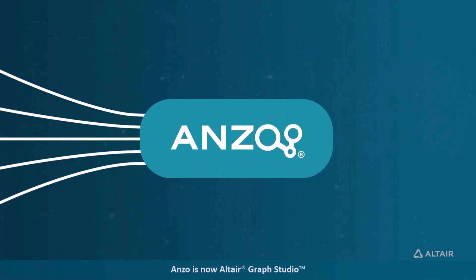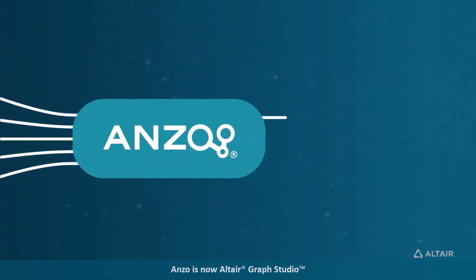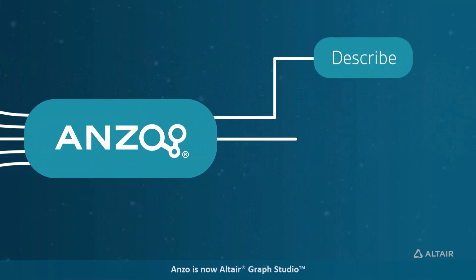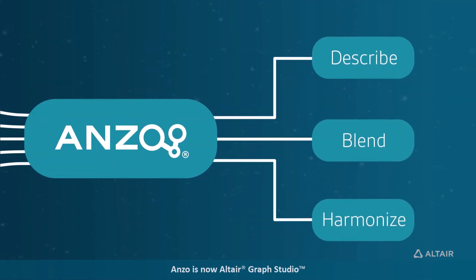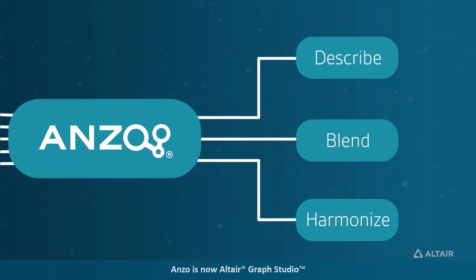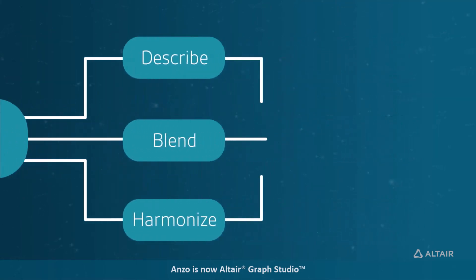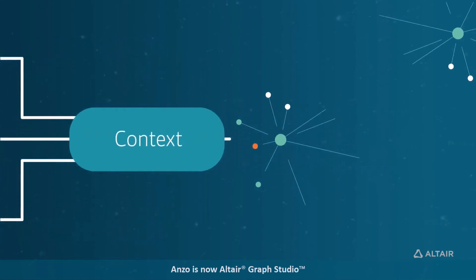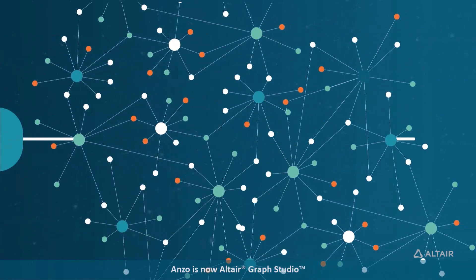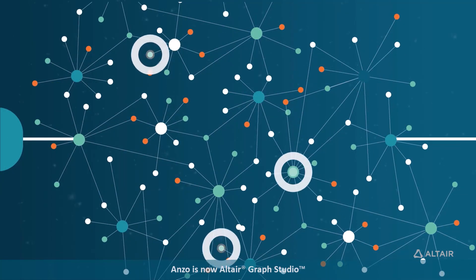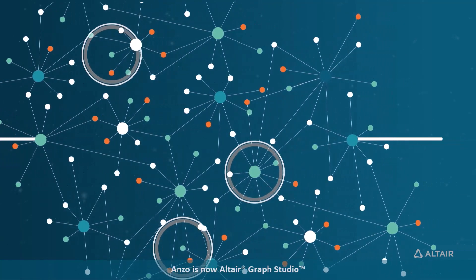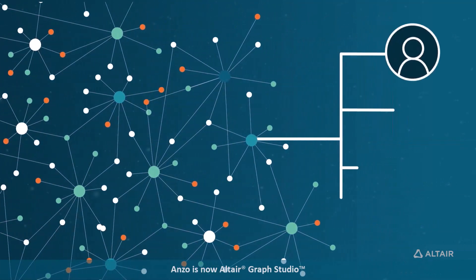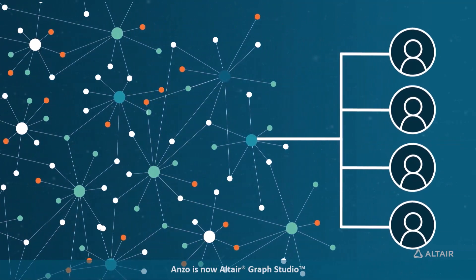Anzo also utilizes semantic technology to describe, blend, and harmonize data sources using common business meaning as well as context to make your data more understandable, often exposing additional connections you didn't even know were there.